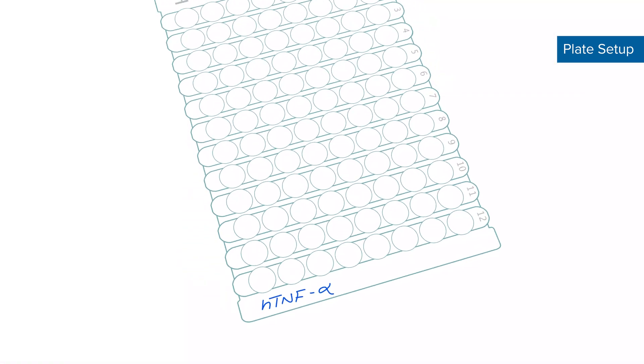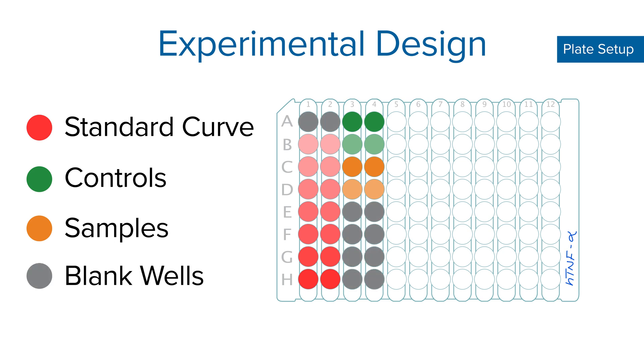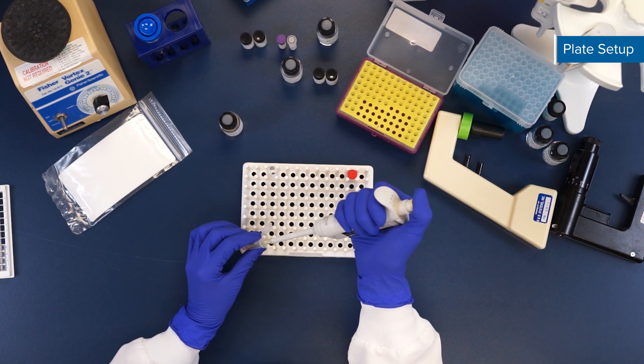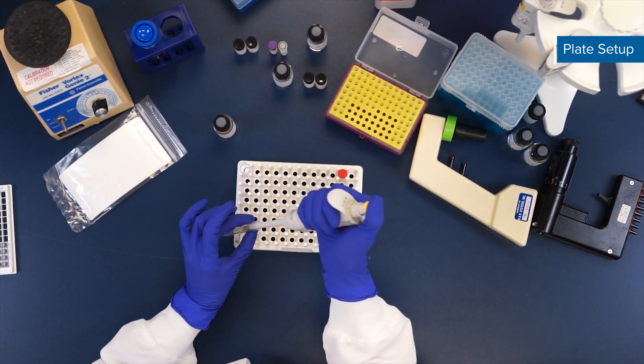In our plate, the standard curve will be set up in duplicate in strips 1 and 2, and our controls and samples in duplicate in strips 3 and 4. This is also where you can consider running additional dilutions of your samples. Follow the recommended sample dilution factor in the sample preparation section of your kit booklet. If a recommended dilution is not listed, samples can be run neat. Multiple dilutions are recommended for unknown samples.